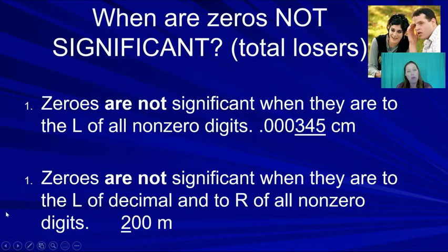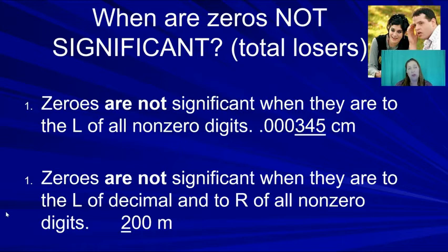The terms 'significant digit' and 'significant figure' mean the same thing — we call them sig figs or sig digs in science. We use them to know what to round to at the end of a calculation.